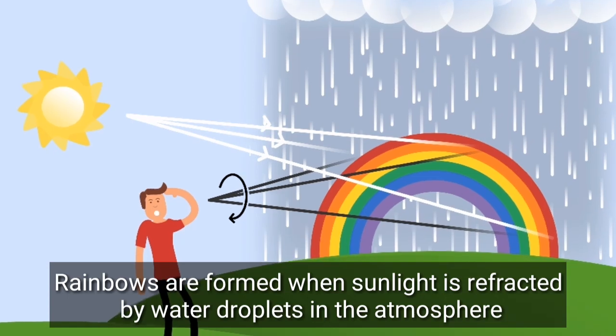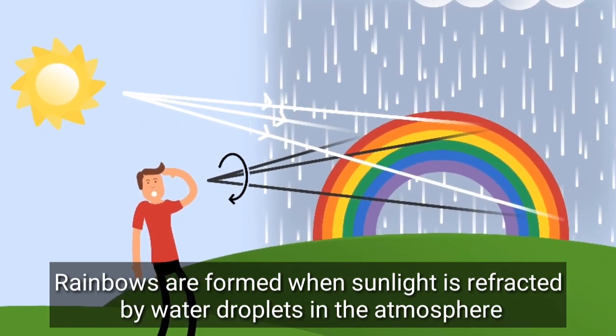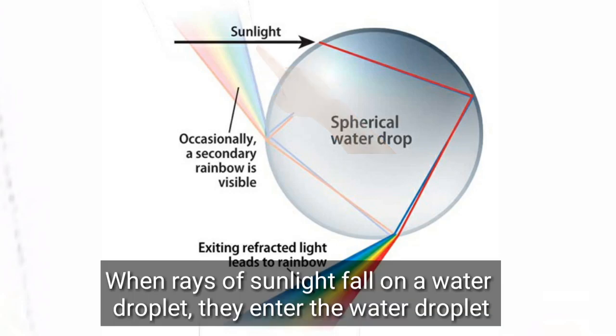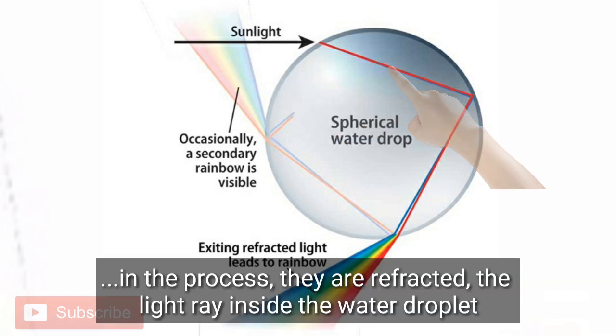Rainbows are formed when sunlight is refracted by water droplets in the atmosphere. When rays of sunlight fall on water droplets, they enter the droplets and in the process they are refracted.